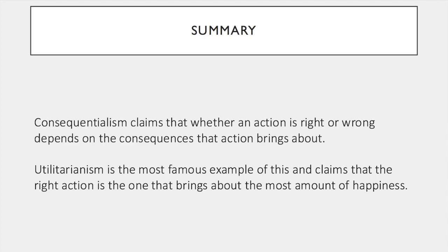In summary, consequentialist ethics claims that what is right or wrong is dependent on the consequences that action produces. The most famous form, utilitarianism, states that the morally right action is the one that produces the greatest amount of happiness overall. Whilst this seems intuitively a good way of determining the right or wrong action, it isn't without fault. Critics claim it commits us to a difficult moral calculus; it can advocate sacrificing innocent individuals, as seen in John Harris's survival lottery thought experiment; and finally, Nozick's experience machine thought experiment showed us that we desire more than just happiness — we want to have authentic experiences.